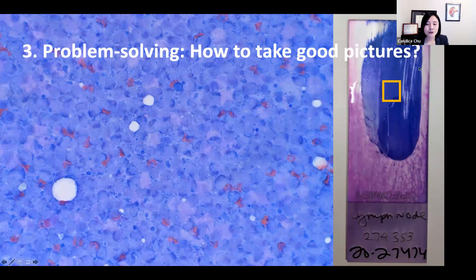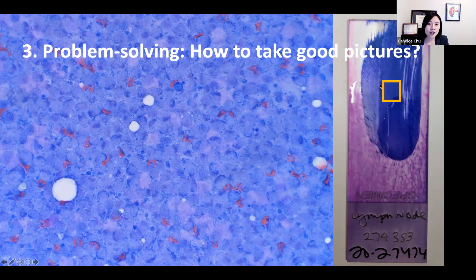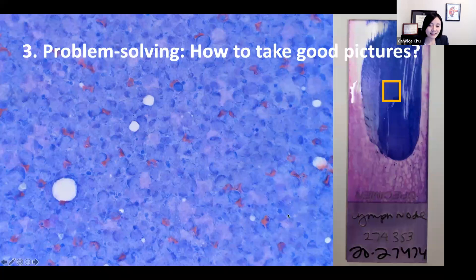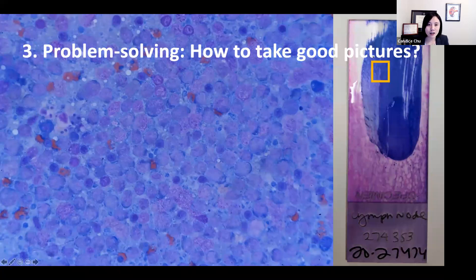This is very blue, so you know that the smear is hypercellular. However, if you jump right into the middle of the smear, this is what you will be seeing. This is too crowded and I can't even appreciate the individual cells.